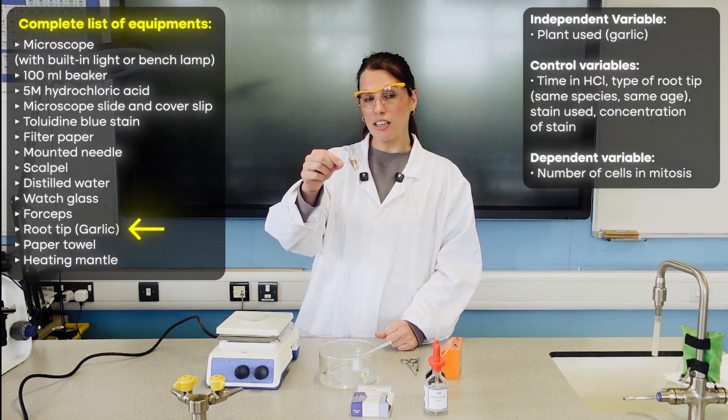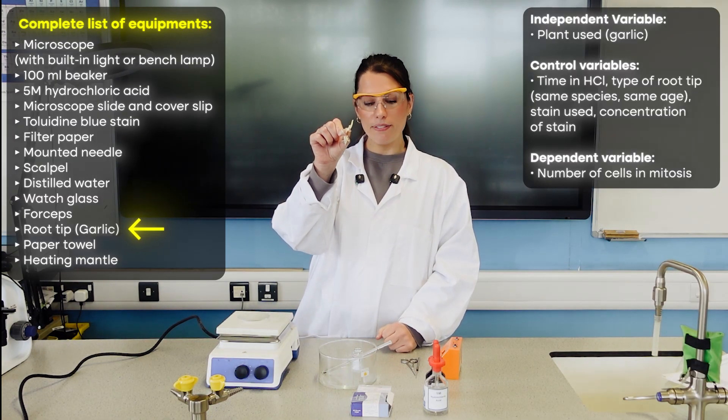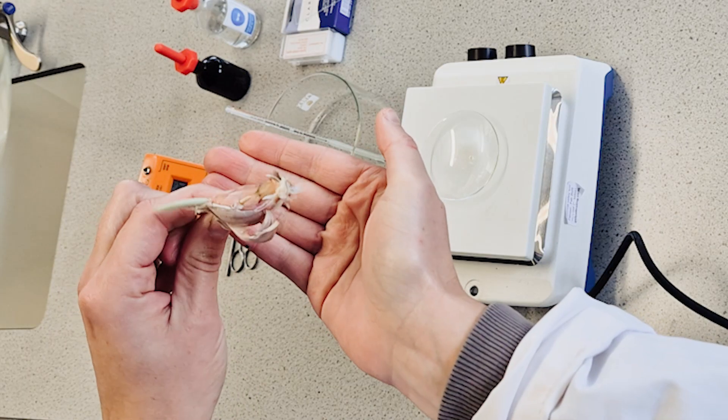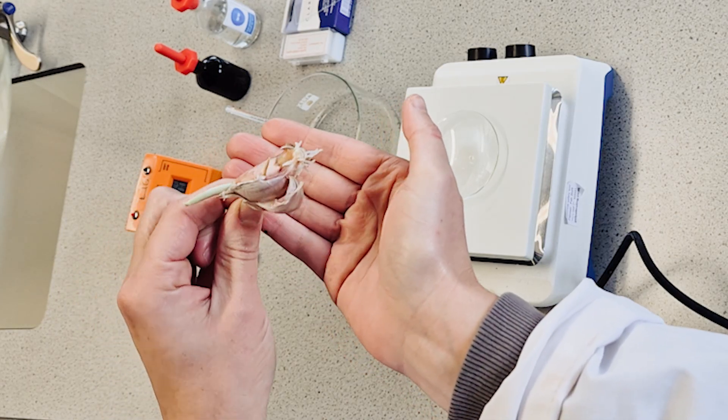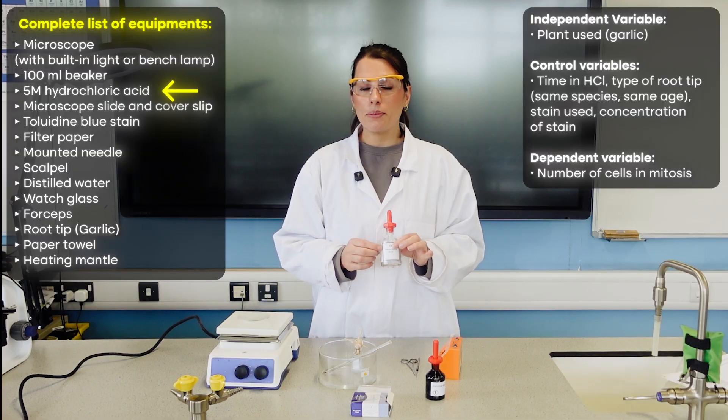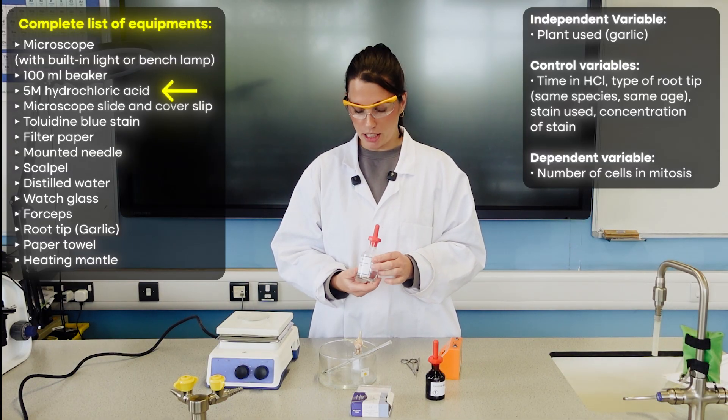You are going to need garlic that has been left to grow submerged in water so you have roots. We need acid, and the role of this acid, which is actually a really common exam question now, is that it's going to stop mitosis happening any further, so we get a snapshot.